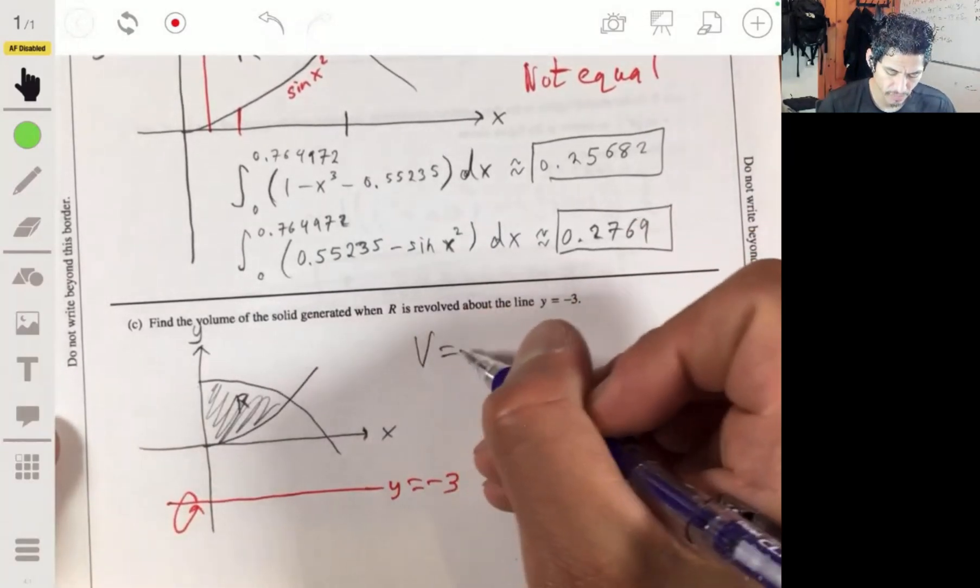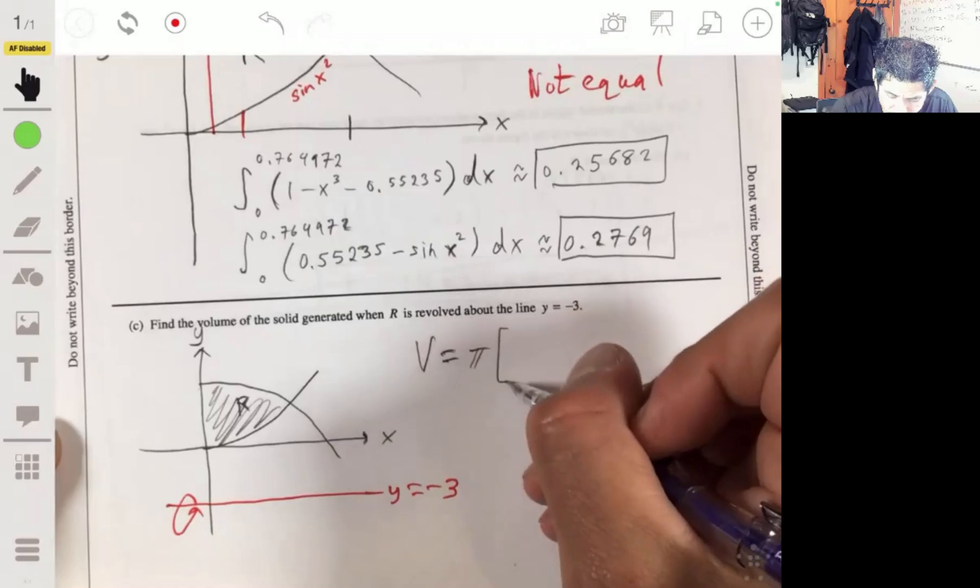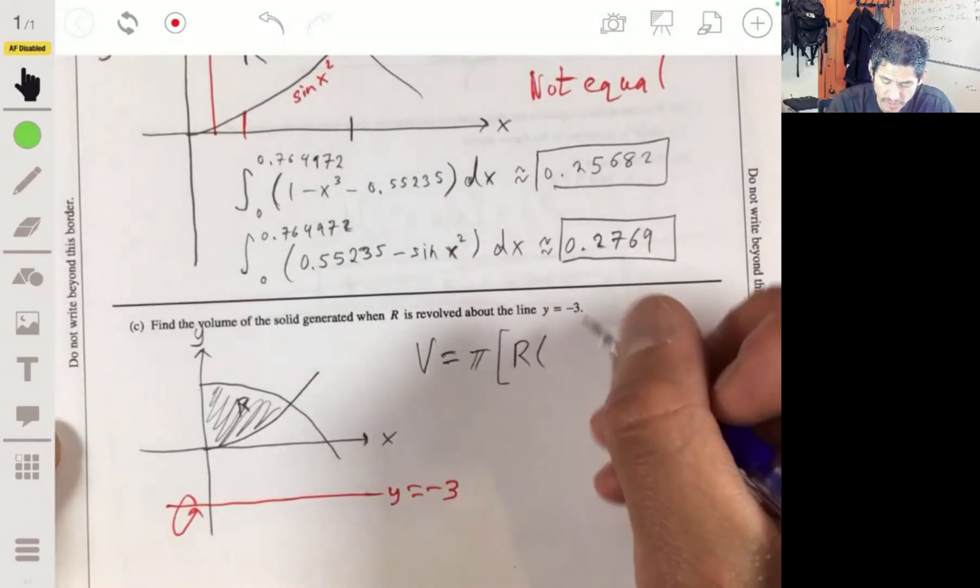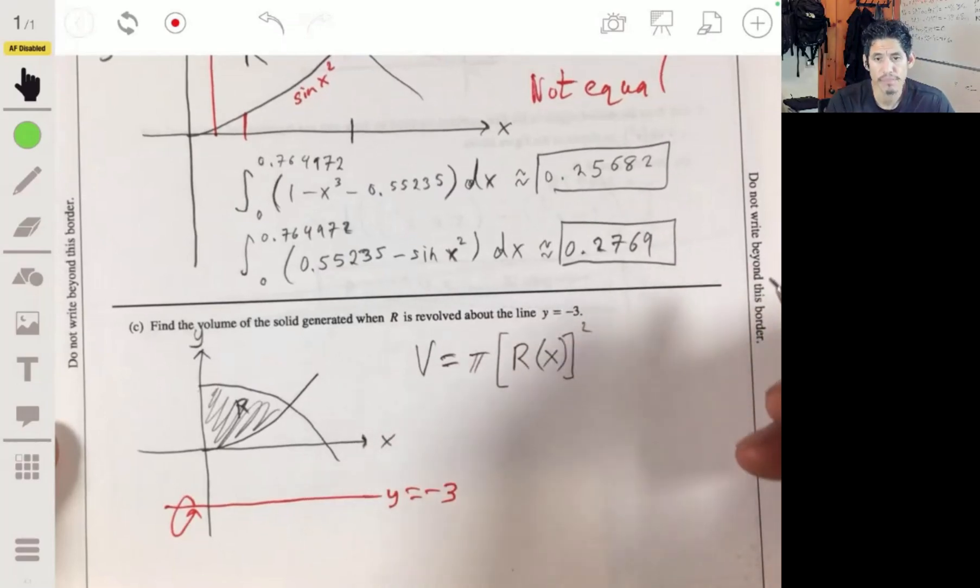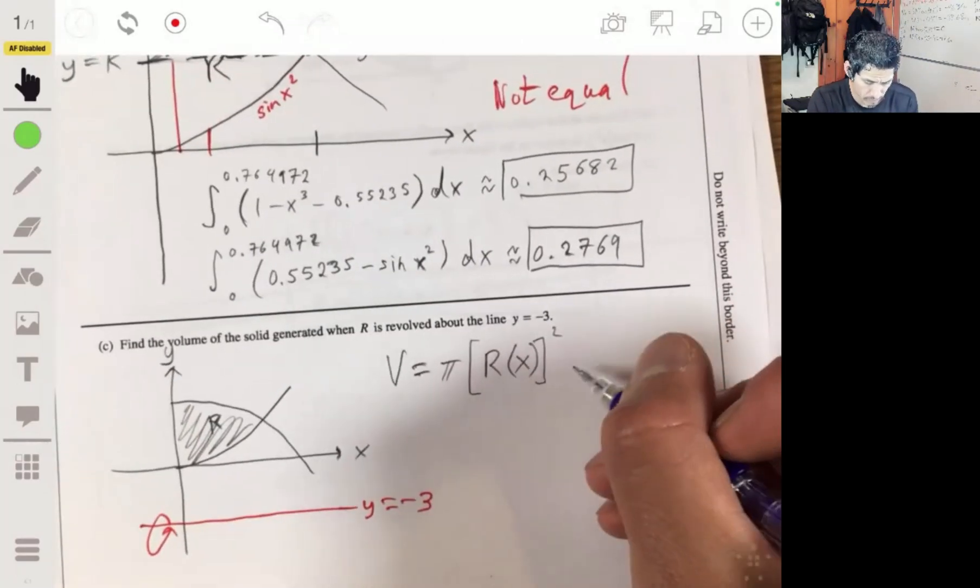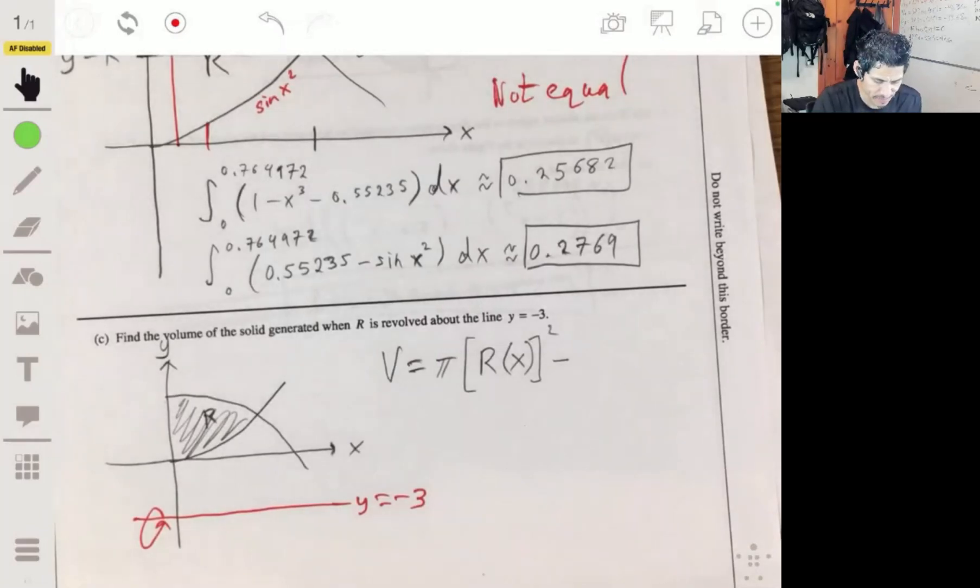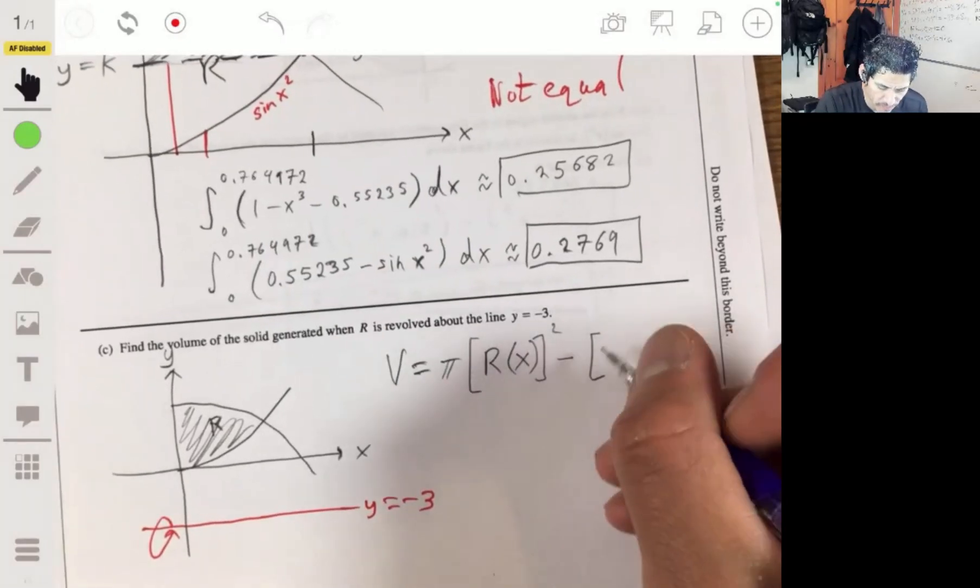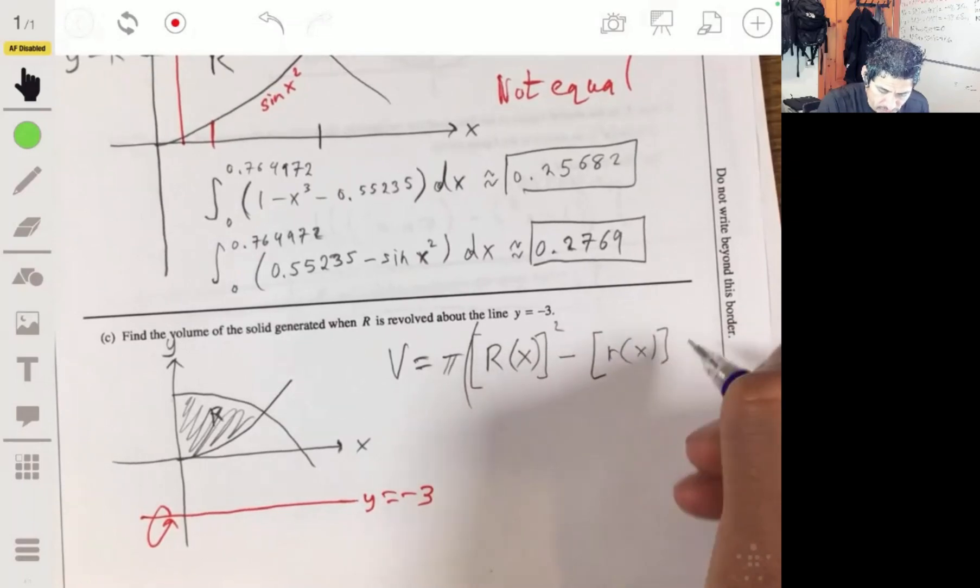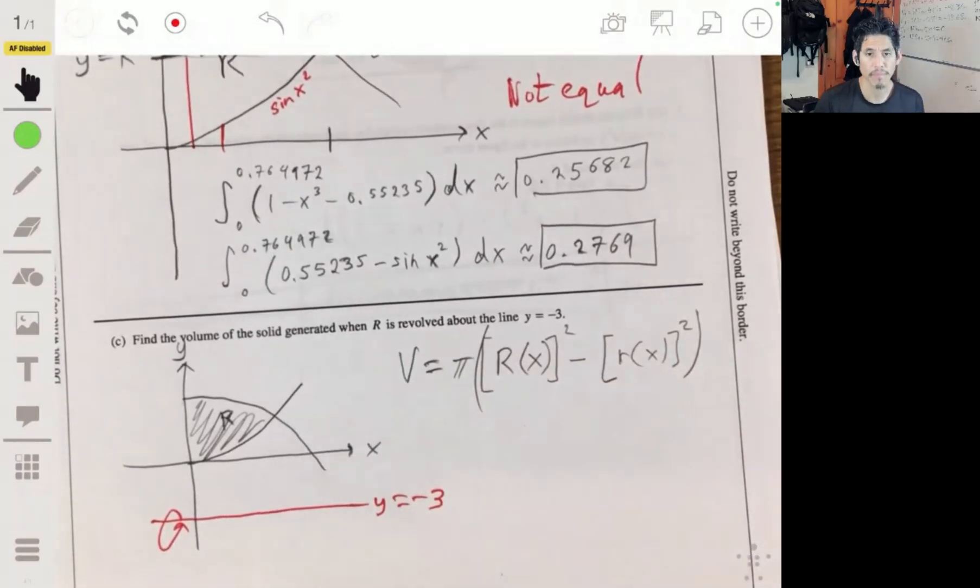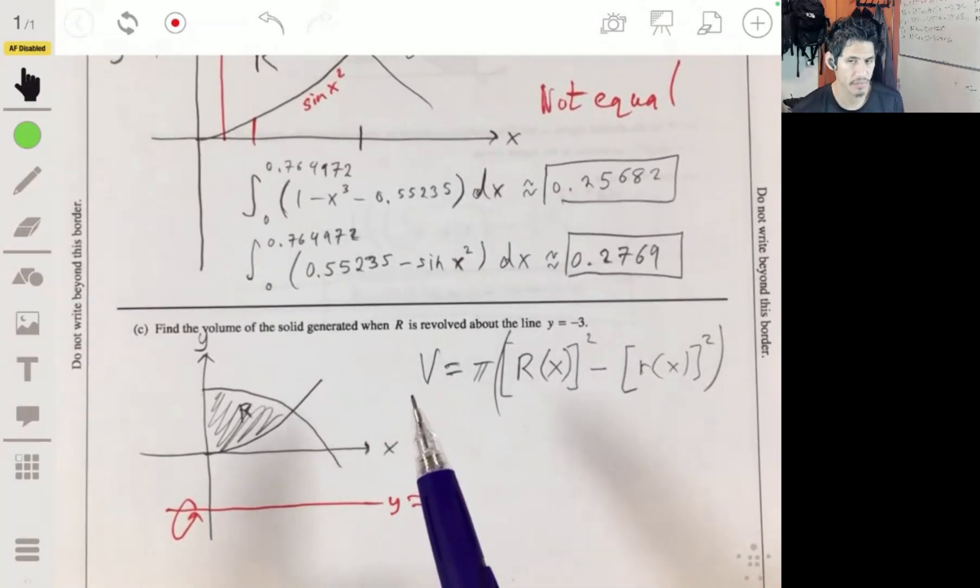Now, remembering the volume of a solid revolution, we have the volume is equal to pi times the large radius squared minus the small radius. Pi times everything minus the small radius, little r of x squared. That's kind of the whole basic idea we'll be using with finding the volumes of the solid revolution.